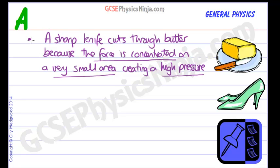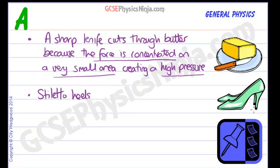Some other examples are stiletto heels. They are a problem for wooden floors and soft flooring. Why? Because the weight of the person is concentrated on the very small area of the stiletto heel, creating a high pressure which can mark the wooden floor. It's basically the same explanation.